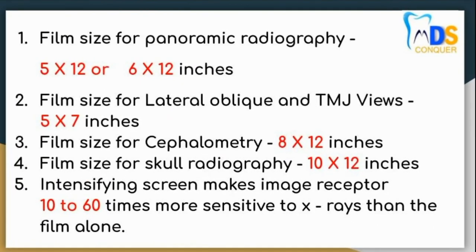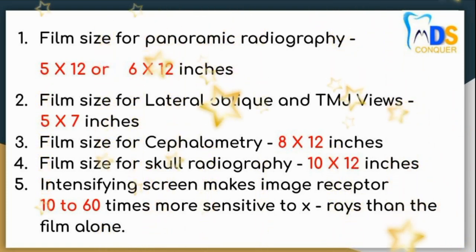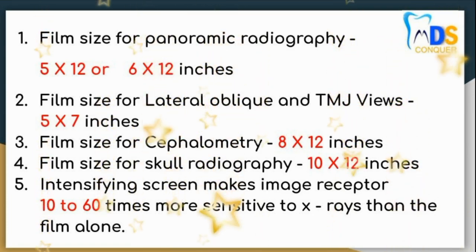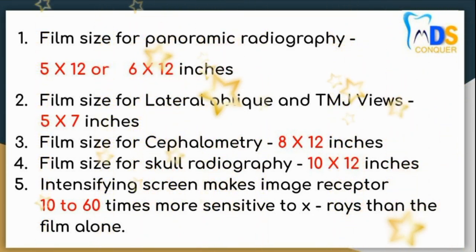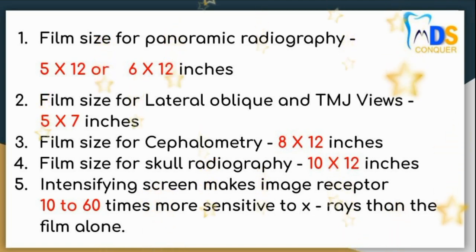Point number 1: Film size for panoramic radiograph is 5x12 or 6x12 inches. Number 2: Film size for lateral oblique and TMJ views is 5x7 inches. Number 3: Film size for cephalometry is 8x12 inches. Number 4: Film size for skull radiography is 10-12 inches.